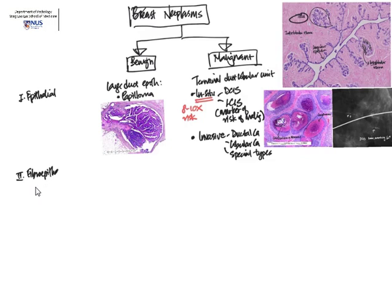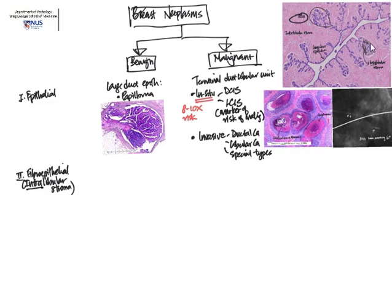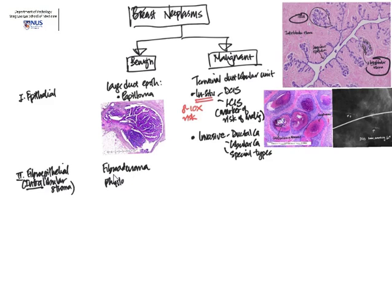Moving on to the next category by tissue of origin: fibroepithelial tumors, sometimes called biphasic tumors. These arise from the intralobular stroma — the specialized stroma around the lobules — and are often composed of both epithelial and stromal elements. It is really the stromal elements that are neoplastic. The most famous benign example is the fibroadenoma.